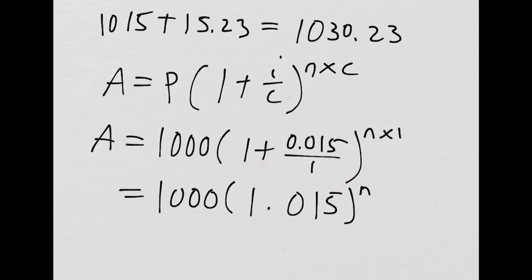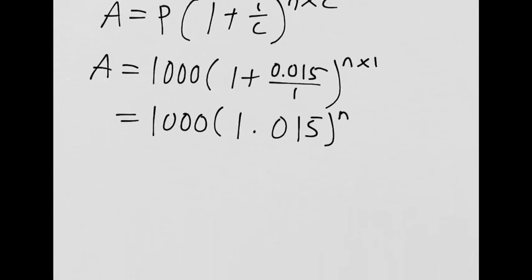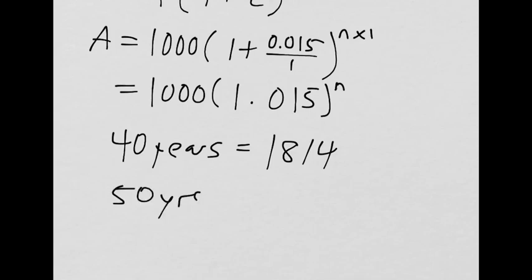After 40 years, you have $1,814. So, graph that thing. You tell me. Tell me some amounts that you have after 30 years, 40 years, 50 years. 40 years, $1,814. So, 40 years is $1,814. 50?